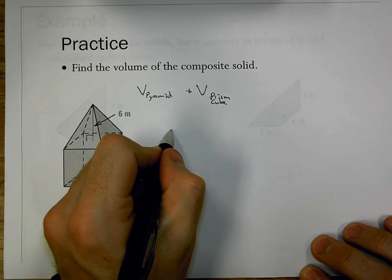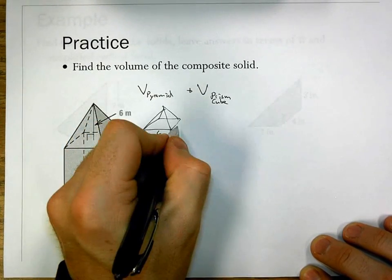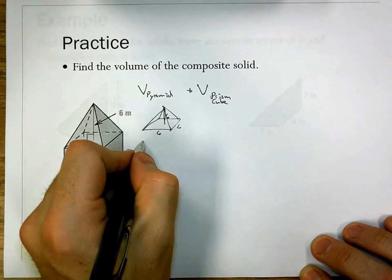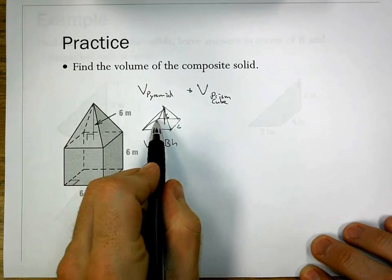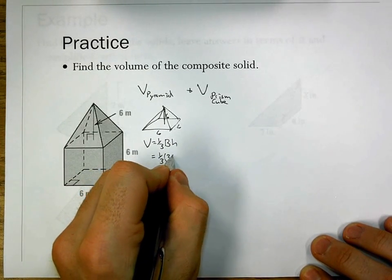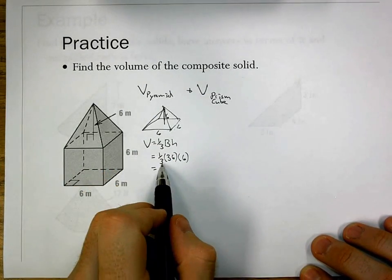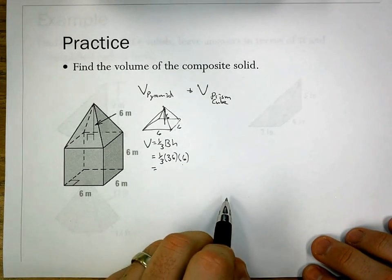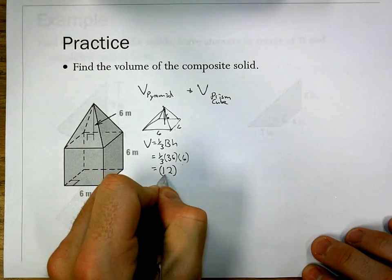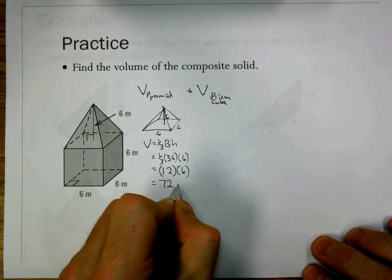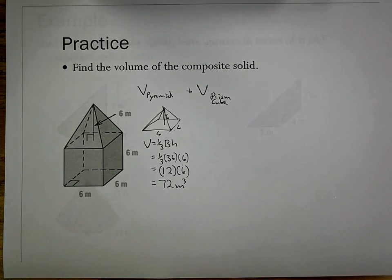Looking at the pyramid, I have it 6 by 6, and then the height is 6. So that's one-third the base area times the height. Our base is a square, so that's 6 by 6 or 36, and our height is 6. I'm going to take one-third of 36. That leaves me with 12 times 6 or 72 meters cubed. Now we still have to find the volume of the prism, but let's take a second and realize here that the volume of that pyramid was supposed to be one-third the volume of a prism with the same dimensions.